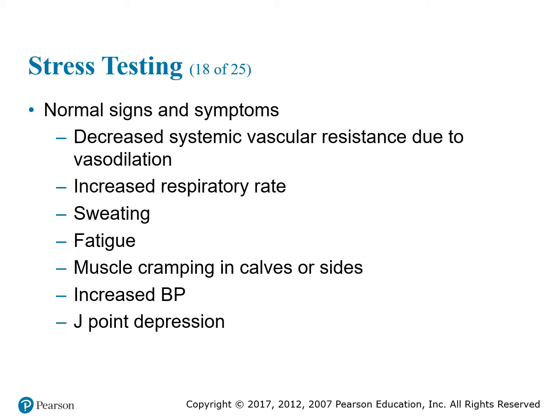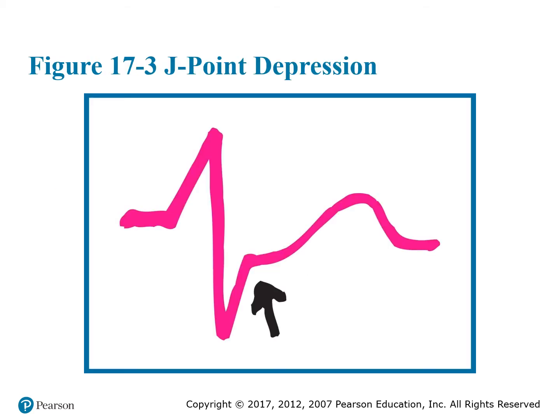J-point depression is another finding seen as a normal sign on a stress test. The J-point is the point at which the QRS joins the ST segment. J-point depression means the ST segment takes off before the QRS complex has reached the baseline. As shown in figure 17-3, just as the QRS ends with a short S wave, the J-point occurs and then the T-wave follows.